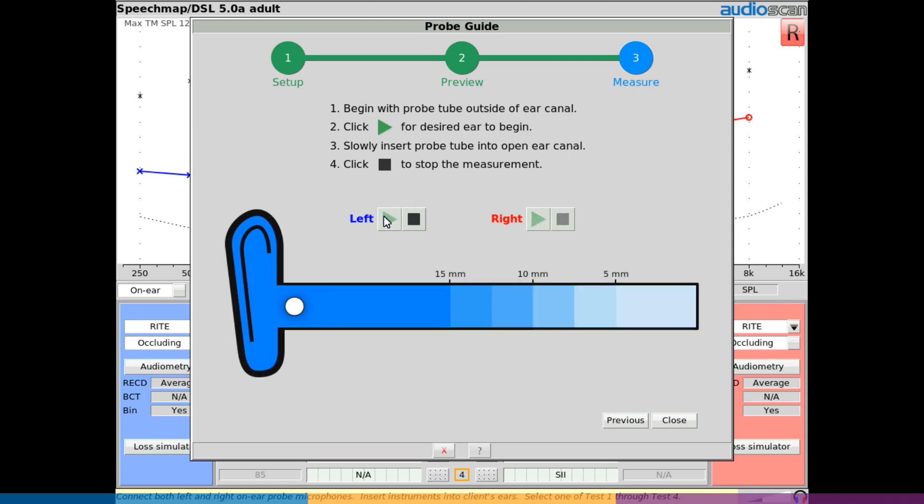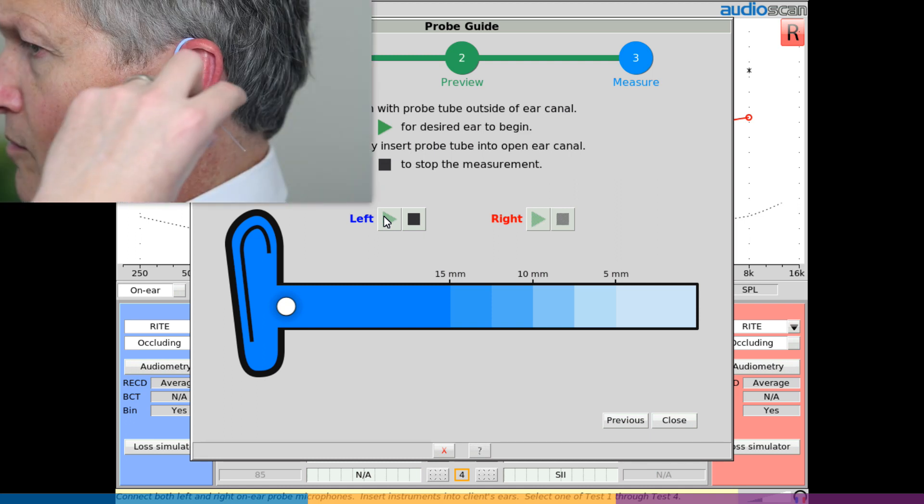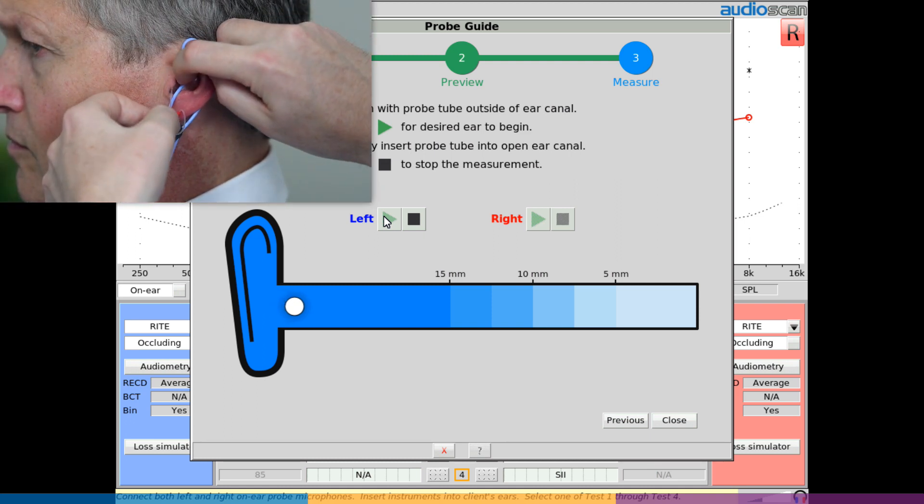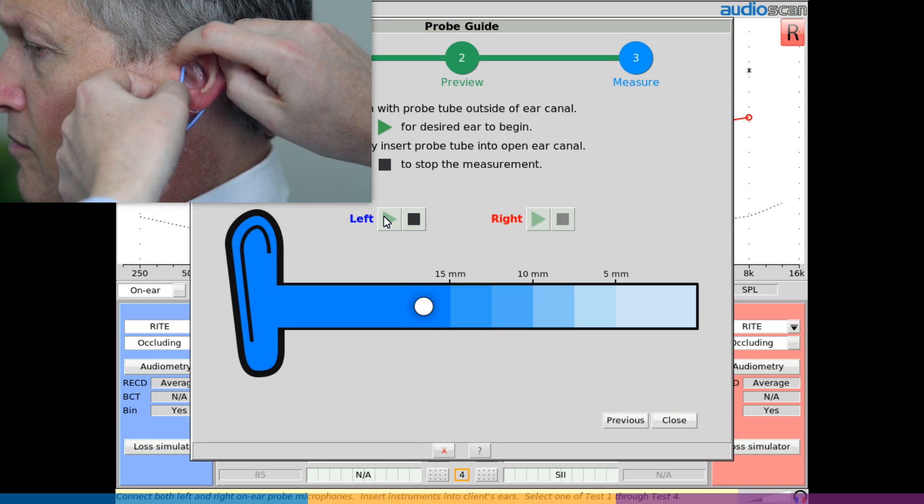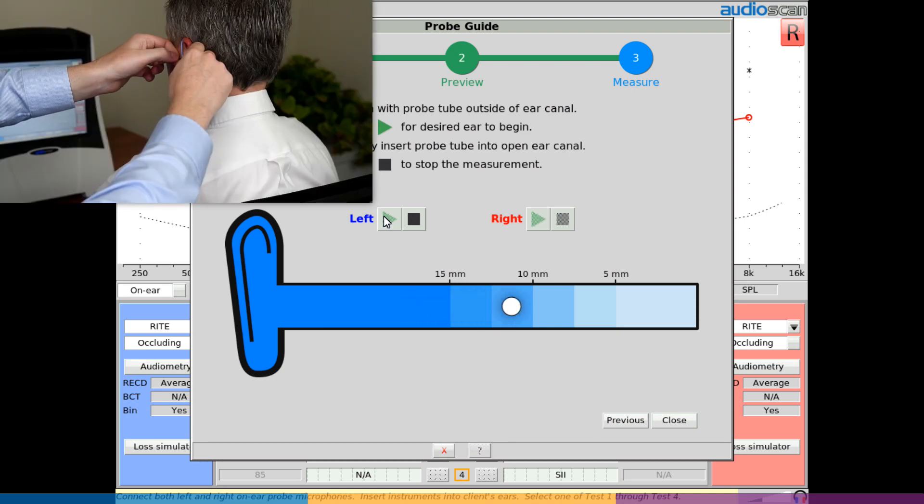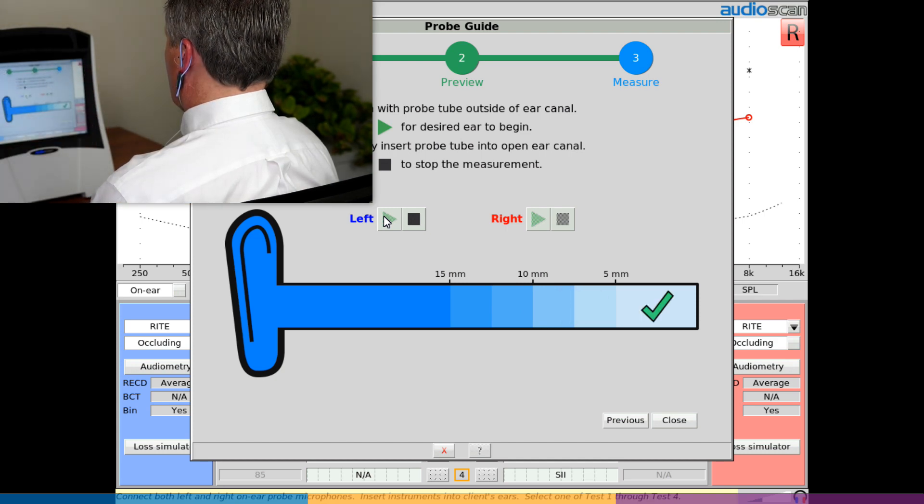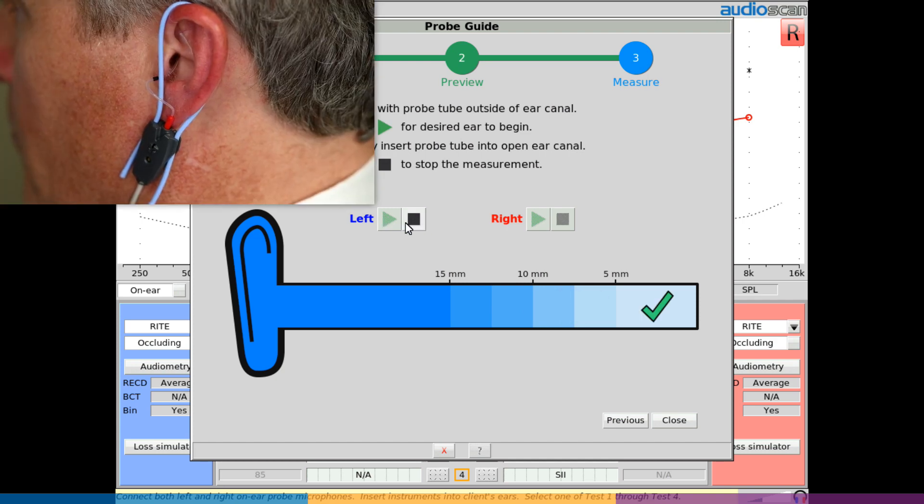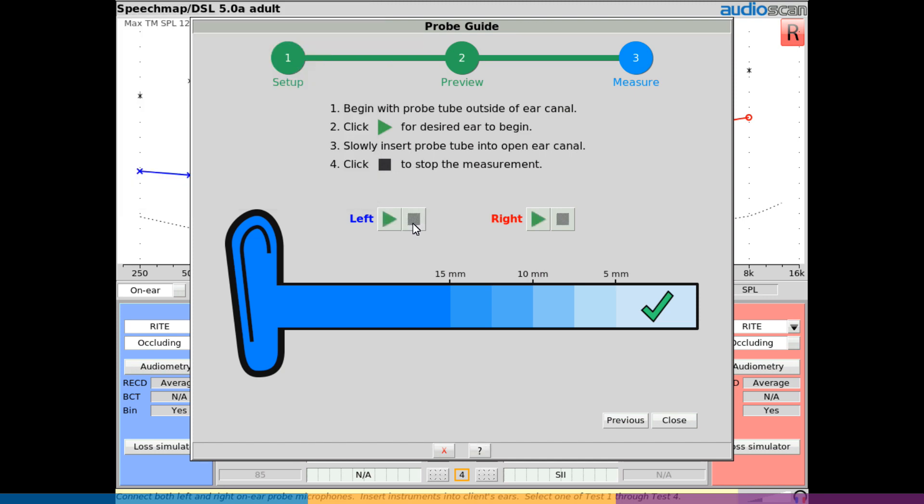For the desired ear, click the Play button to start. A broadband noise will be presented from the loudspeaker. Starting outside the ear canal, slowly insert the probe tube around the front of the lanyard. When the probe tube tip has reached an appropriate depth, a green check mark will be shown on-screen, accompanied by an audible chime. Click Stop to complete the procedure.